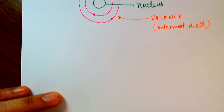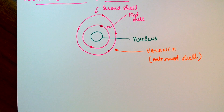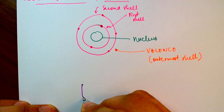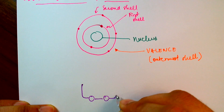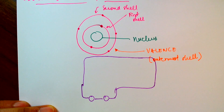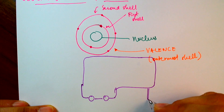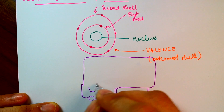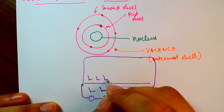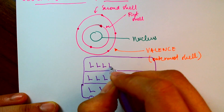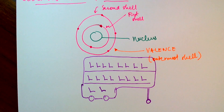Electrons are arranged in a very special manner. Let's take, for example, an atom that has only three shells. By way of analogy, you can think of this atom as a triple-decker bus. This bus has three levels. On the first level there are two seats, on the second level there are eight seats, and on the third level there are also eight seats.